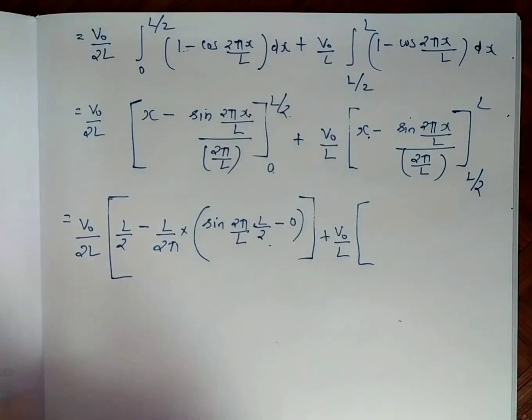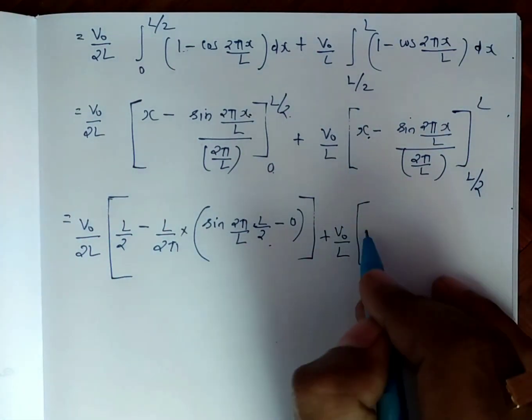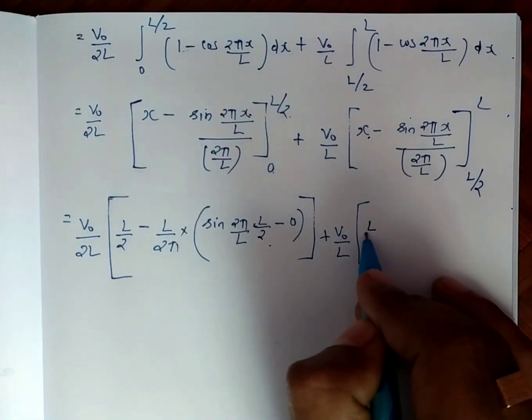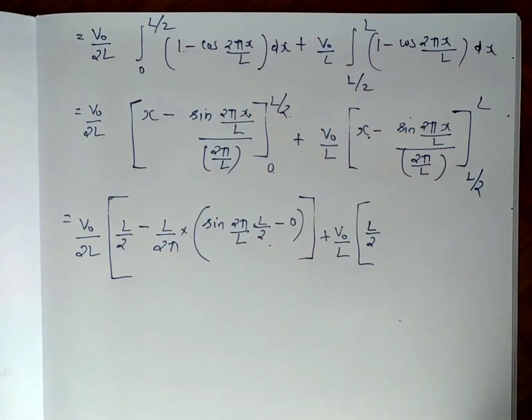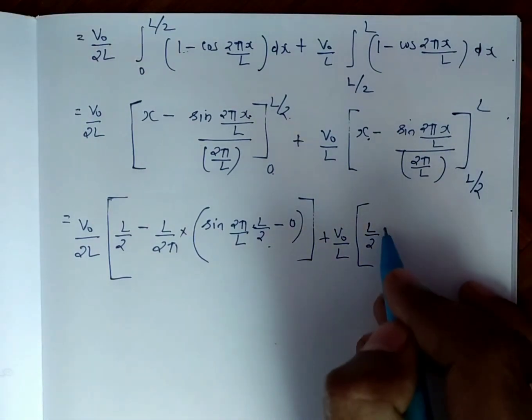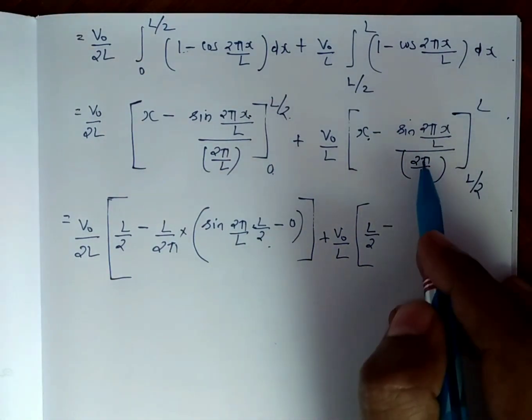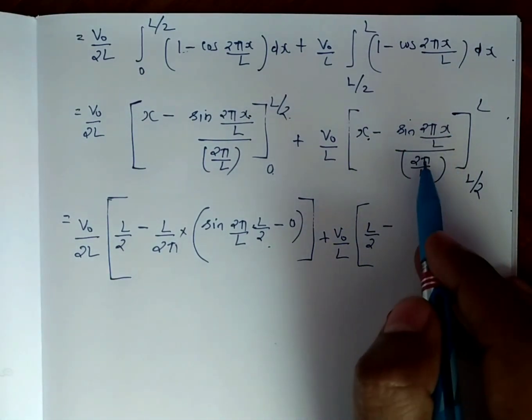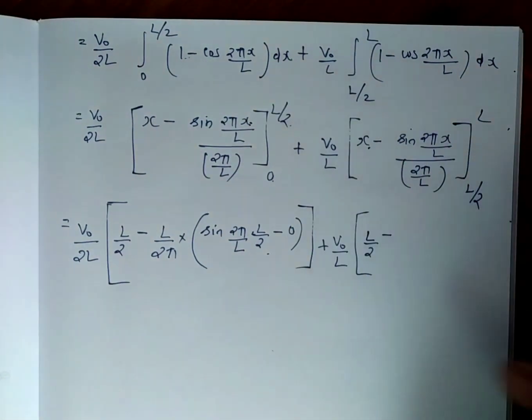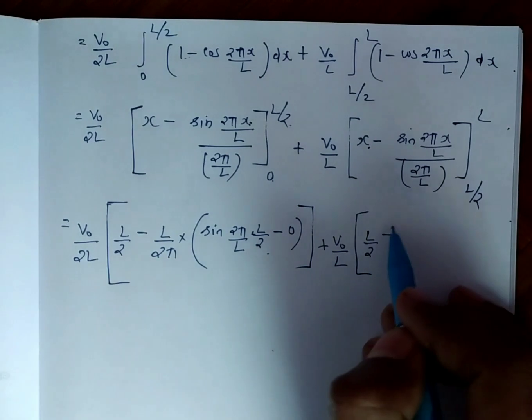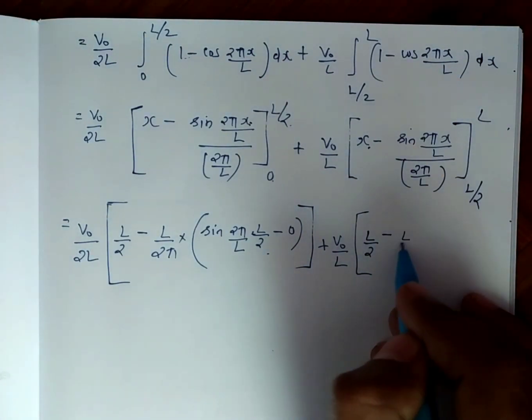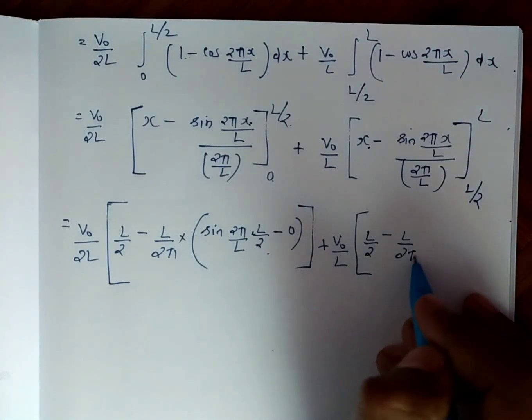For the second integral with limits L/2 to L: we get L minus L/2, and for the sine term, L/(2 pi) times sin(2 pi x / L) evaluated at the limits.